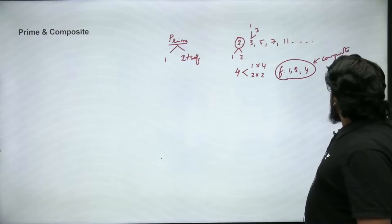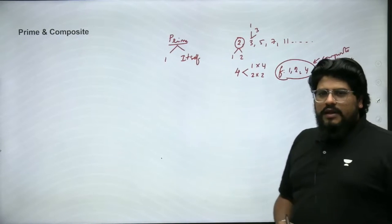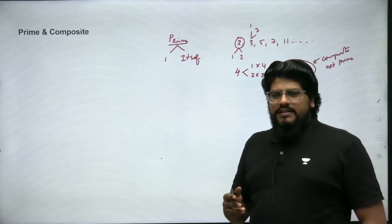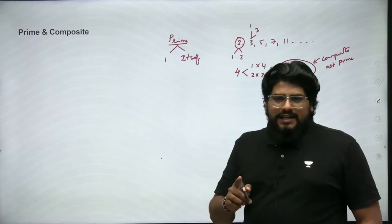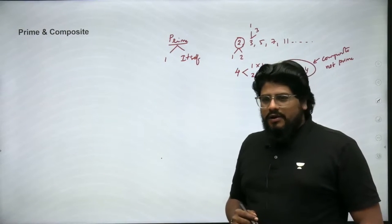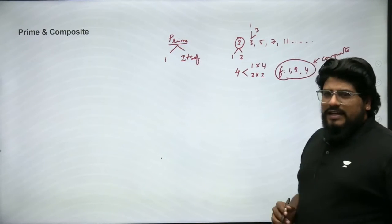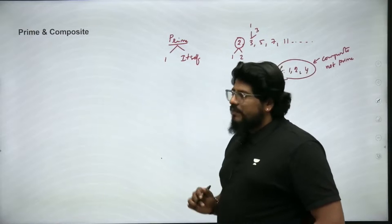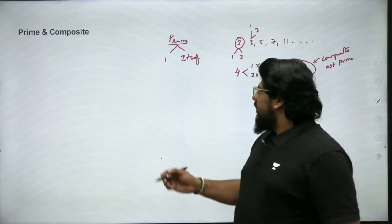Since 4 has three factors, which is more than two factors, it is not a prime. So all we need to do is check its factors — if it has more than two factors, then it is not a prime number. This is very clear and understandable.